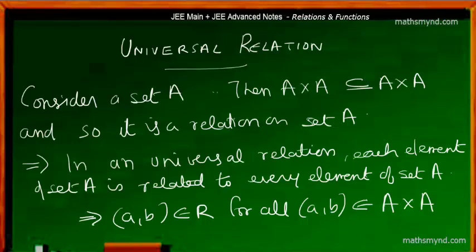Let's now consider a particular relation which is quite opposite to the void relation. In the sense that a void relation has no element or ordered pair present, whereas for universal relation we have all possible ordered pairs.